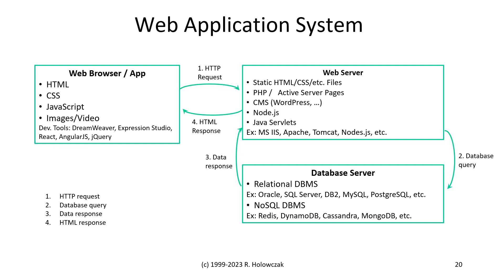In this architecture, the interaction begins when the user works on their web browser or app, makes a gesture, types something in, or clicks on a button. That generates an HTTP request that goes to the web server. The web server receives that request, and then the programming language goes into effect to implement any necessary business logic. The result is a database query that gets sent to the database server.